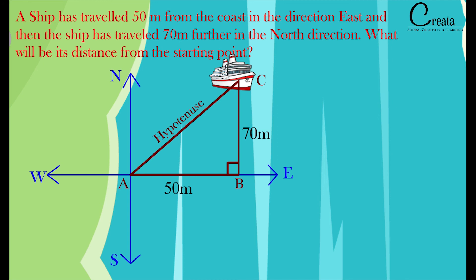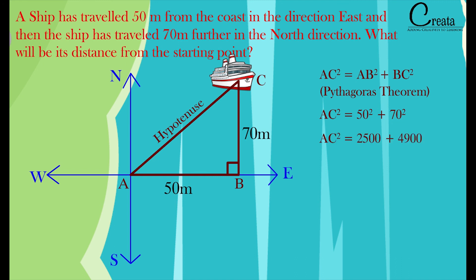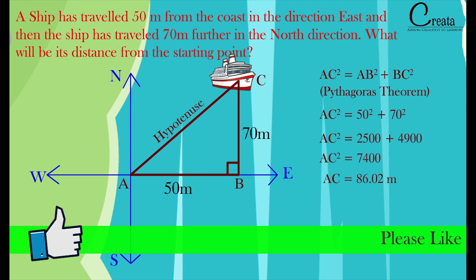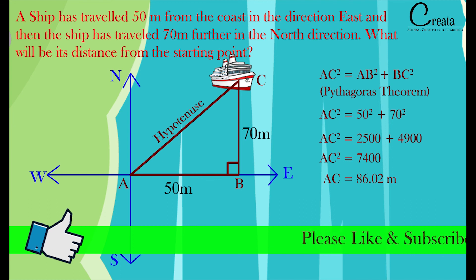Applying the Pythagoras theorem — the square of the hypotenuse equals the sum of the squares of the other two sides — we get AC squared equals AB squared plus BC squared, that is AC squared equals 50 squared plus 70 squared. Solving this, we get AC as approximately 86.02 meters.